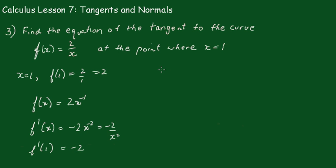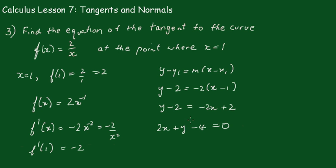Alright, so now we have the points and the gradient. So we need to use y - y₁ = m(x - x₁). And put those points in. This is y minus, the y value was 2. The gradient was minus 2. And the x value was 1. So this is y - 2 = -2x + 2. Putting it in general form, we get 2x + y - 4 = 0 as our equation of the tangent.